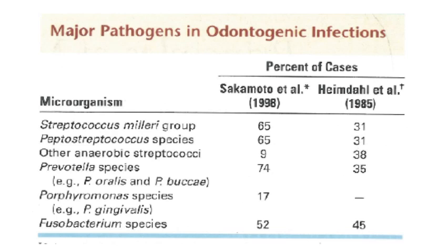Now let's review the major pathogens in odontogenic infection. Sakamoto et al. (1988) and Heimdahl et al. (1985) summarized the microorganisms involved: the Streptococcus milleri group, Peptostreptococcus species, other anaerobic streptococci, Prevotella species such as Prevotella oralis, Porphyromonas species such as Porphyromonas gingivalis, and Fusobacterium species.